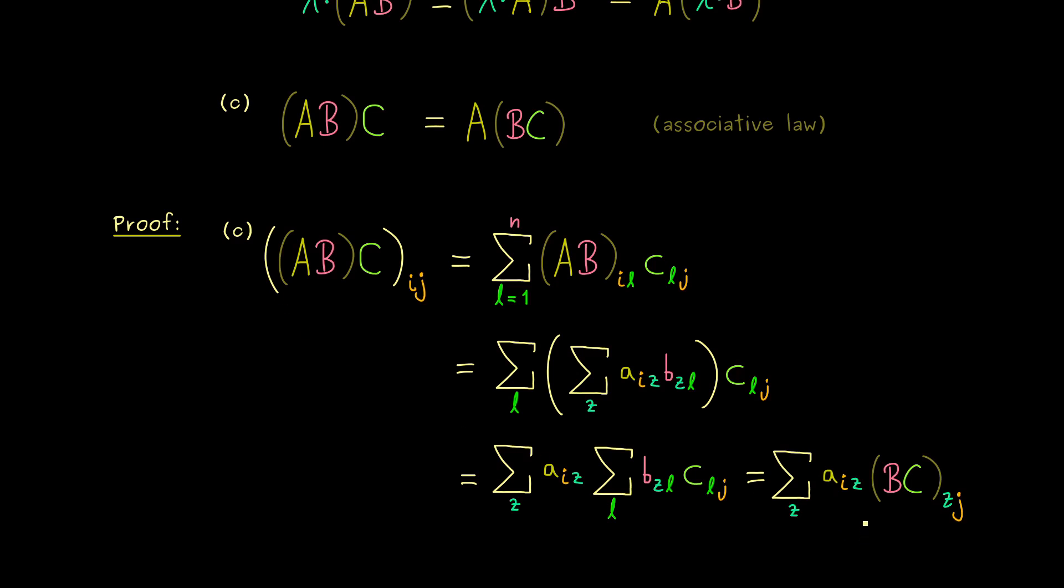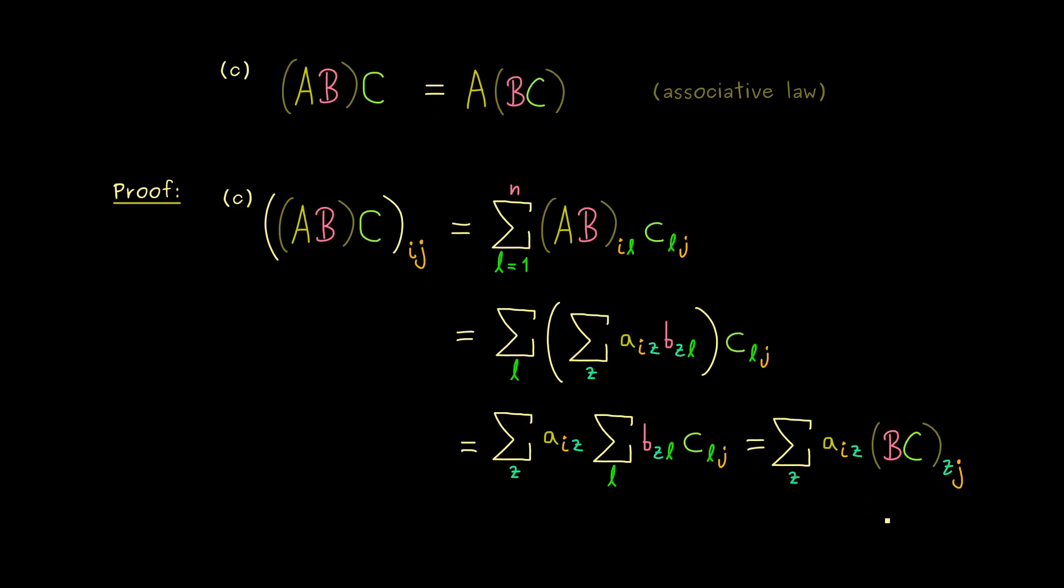So let's write that with the correct indices. So we see, we need the indices Z and J. Therefore, the important part here is, we have the index Z in the middle again.